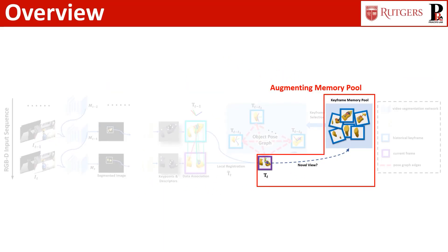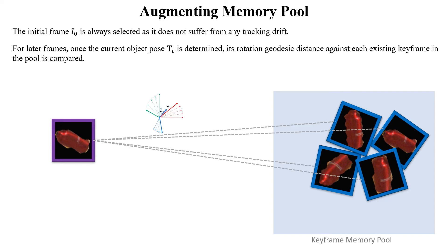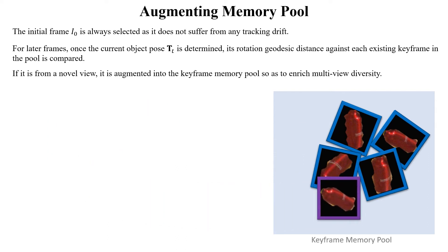To augment the memory pool, the initial frame is always selected as it does not suffer from any tracking drift. For later frames, once the current object pose is determined, its rotation geodesic distance against each existing keyframe in the pool is compared. If it is from a novel view, it is augmented into the keyframe memory pool so as to enrich multi-view diversity.